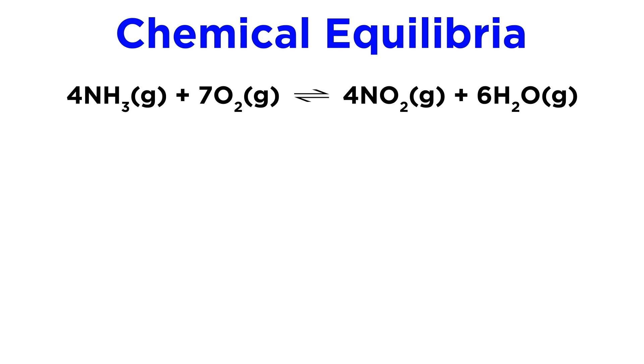First, we have 4 moles of ammonia gas and 7 moles of oxygen gas in equilibrium with 4 moles of nitrogen dioxide gas and 6 moles of water vapor. What will be the equilibrium expression for this system? Since these are all gaseous species, they will all be present in the equilibrium expression.